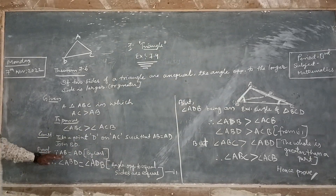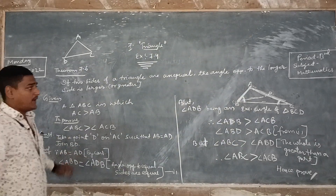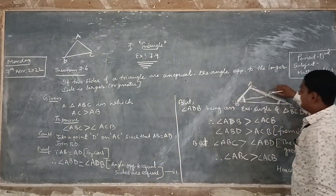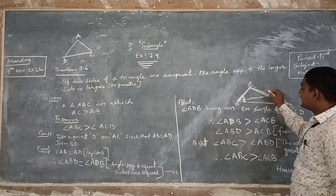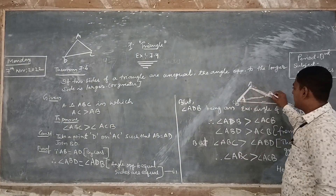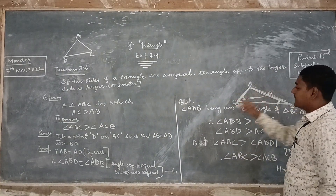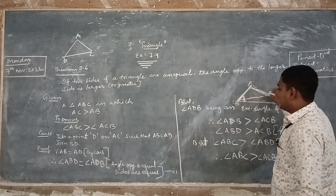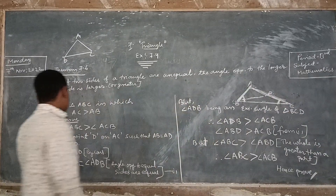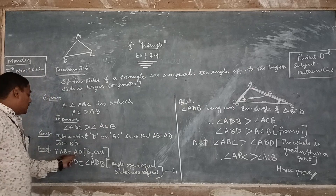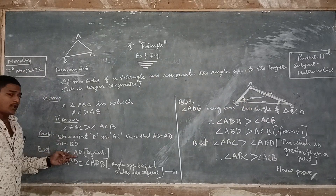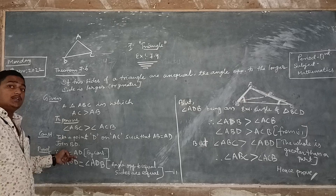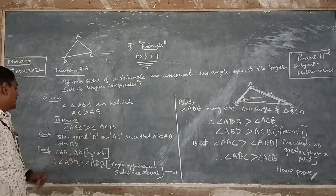Now, since AB is equal to AD by construction, and as we know, if two sides of a triangle are equal, then the angles opposite to those equal sides are also equal.